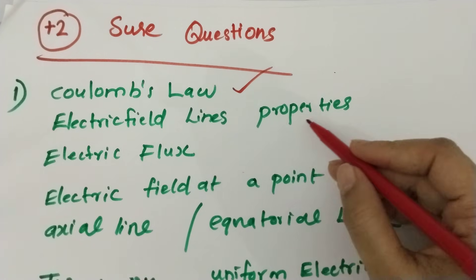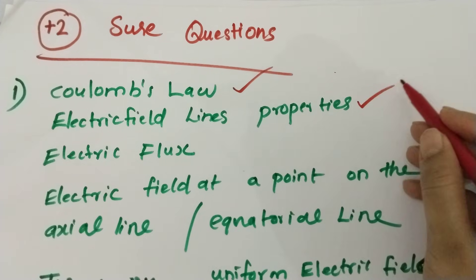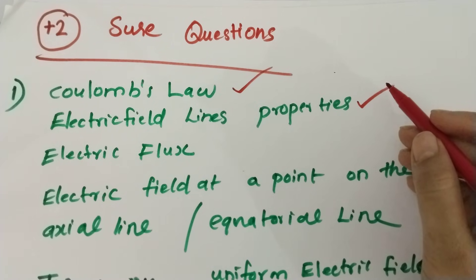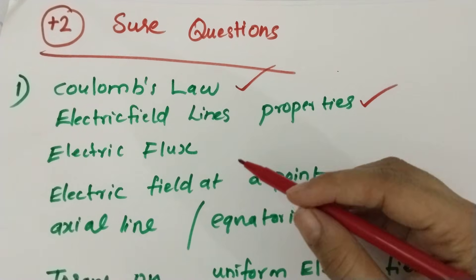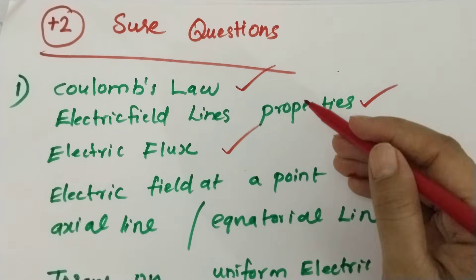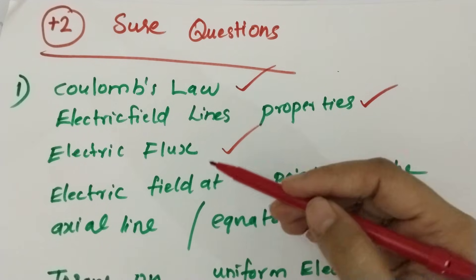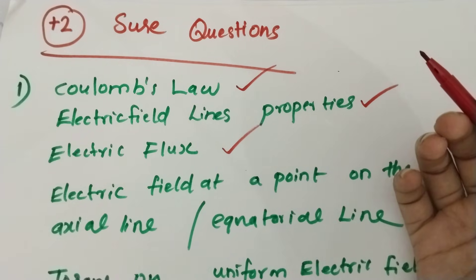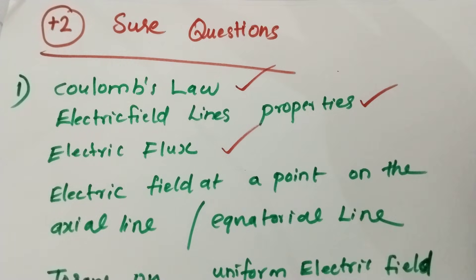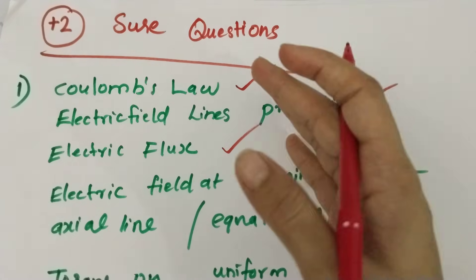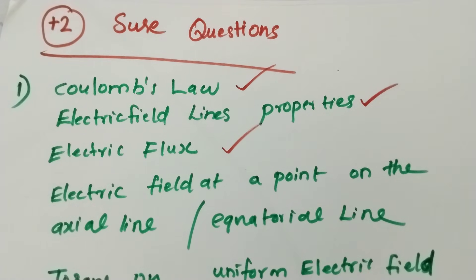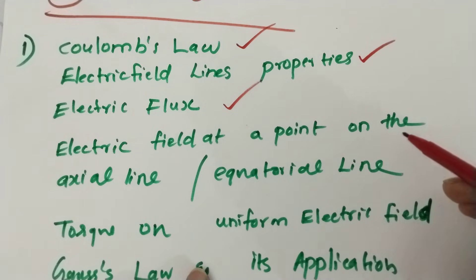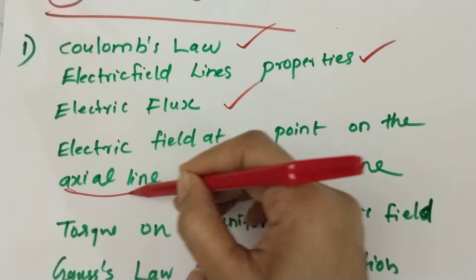We will learn about electric field lines, and we will learn how to define electric flux and how to explain electric flux. Electric field is a point on an axial line.